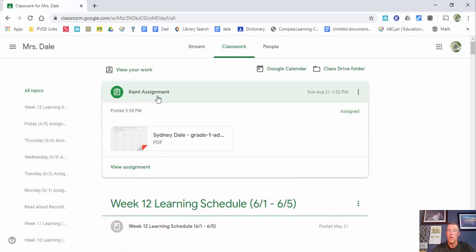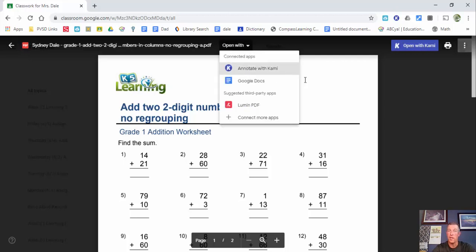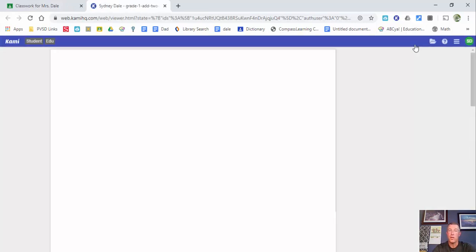We're going to select Kami assignment and then select this PDF right here. There are two ways you can open with Kami: you could open with and annotate with Kami here, or just select open with Kami.